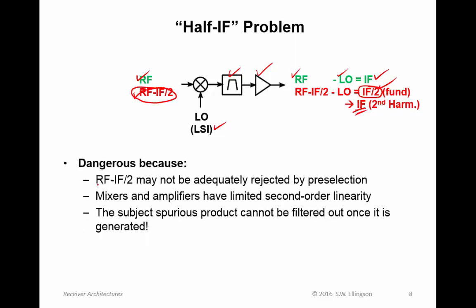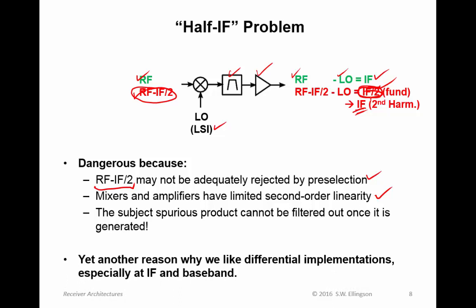This is dangerous because it may be too hard to get RF minus IF/2 adequately rejected by preselection. It's also dangerous because mixers and amplifiers have limited second-order linearity. And finally, the spurious product cannot be filtered out once it's generated — once we have it, it will be in the output and we can't discriminate between them. This is yet another reason why we like differential implementations, especially at IF and baseband, since differential circuits have intrinsically better second-order linearity. You frequently see the first stages in a receiver as single-ended, and later stages as differential, and this is one reason why.